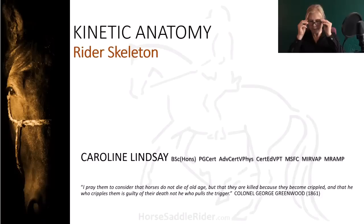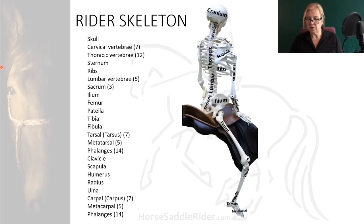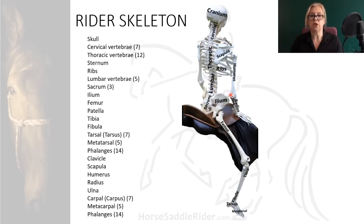In this presentation, we will consider the rider's skeleton in relation to equitation. Before we take a look at the effects of the saddle on the rider's alignment, let's first take a brief look at the names of the different bones of the skeleton involved in equitation, which is virtually all of them.